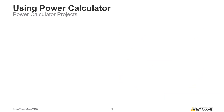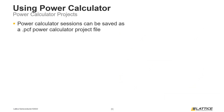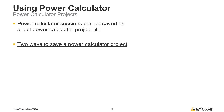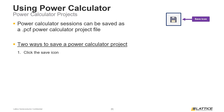A Power Calculator session can be saved as a Power Calculator project file. This .pcf Power Calculator project file can be used to open an existing Power Calculator project after it has been closed. There are two ways users can save a Power Calculator project. The first way is to click the save icon from Radiant's toolbar, as can be seen from the figure on the slide. The second way to save a Power Calculator project is to use the Control+S keyboard shortcut.